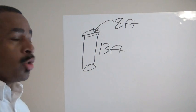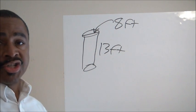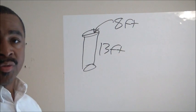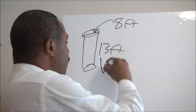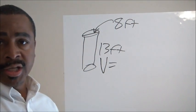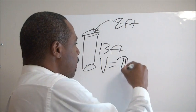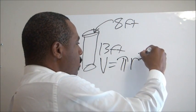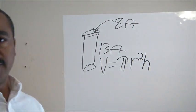The other thing we need to know is, what kind of shape is this? Well, this is a cylinder, and so we need to know that the formula for the volume of a cylinder is pi times r squared times height.